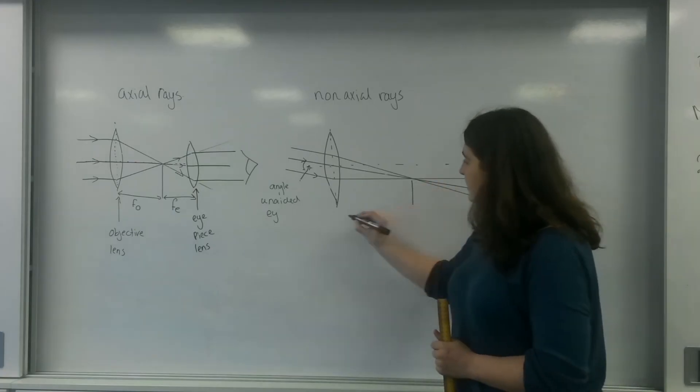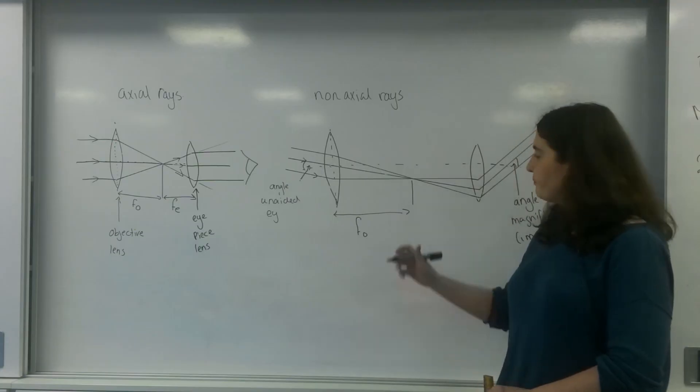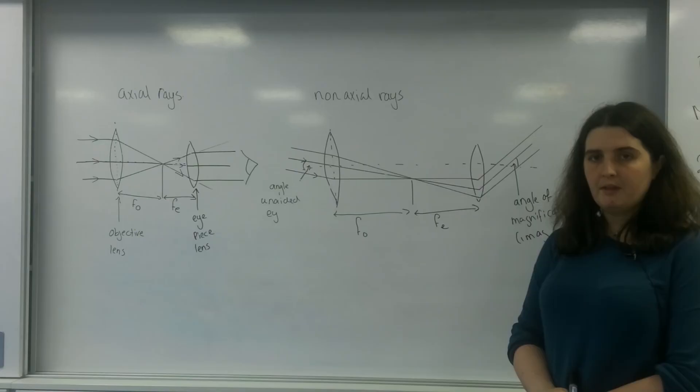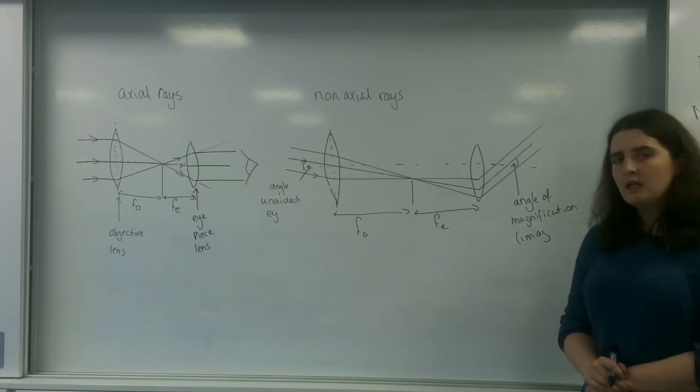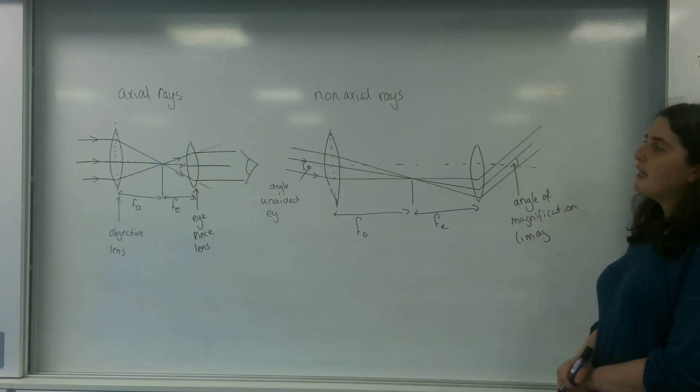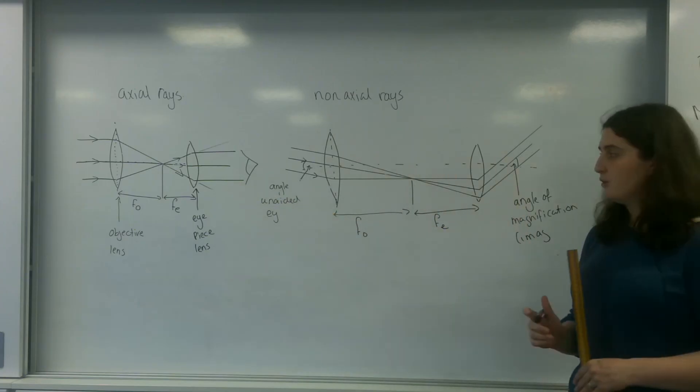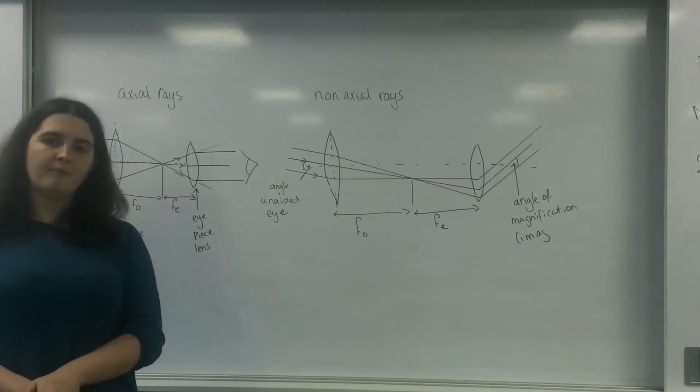This distance here to here is the focal length of the objective lens, and this distance here to here is that of the eyepiece. You'll have to label those on there too. That is a telescope in the normal adjustment with axial and non-axial rays here. This is a fully labeled diagram. You may be asked for either one. That is a refracting telescope in the normal adjustment.